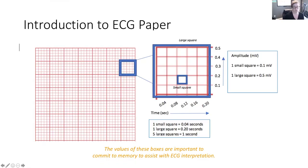Before we can interpret and measure a patient's ECG tracing we need to understand the elements of the paper we are using. ECG paper is composed of large squares and small squares. A large square consists of five smaller squares, and a large square measures a time frame of 0.20 seconds.